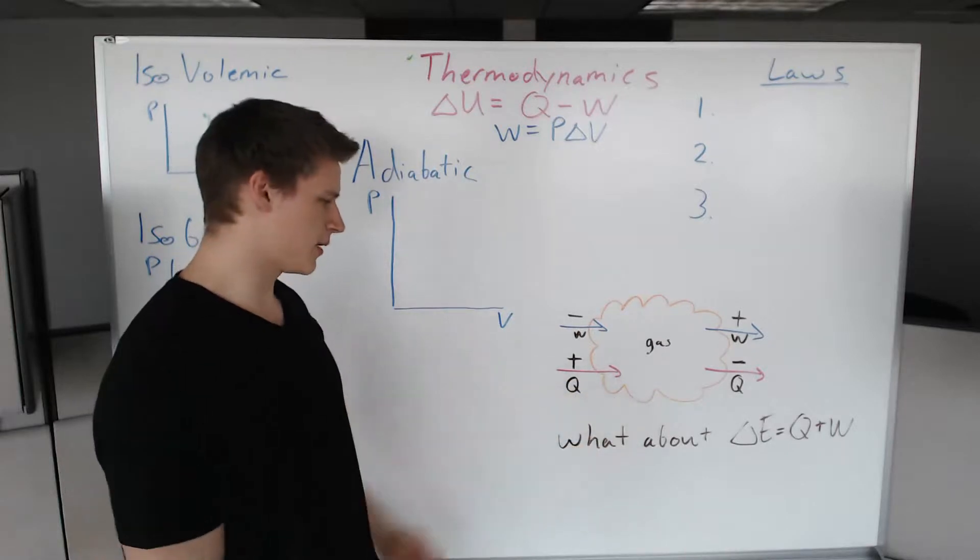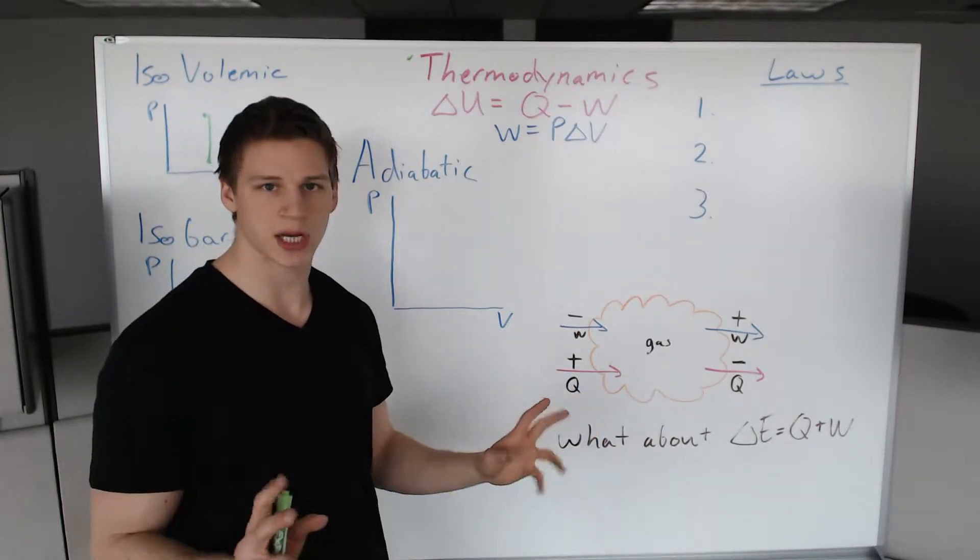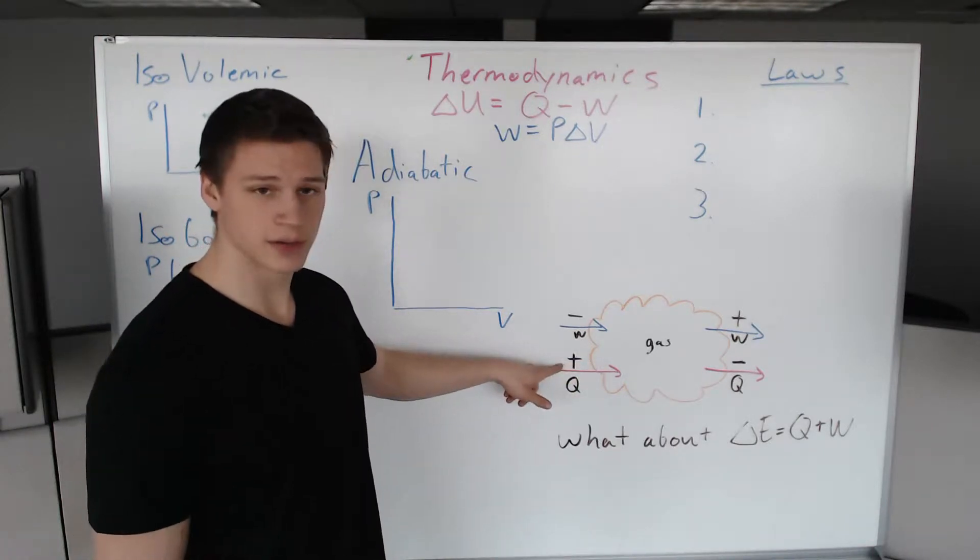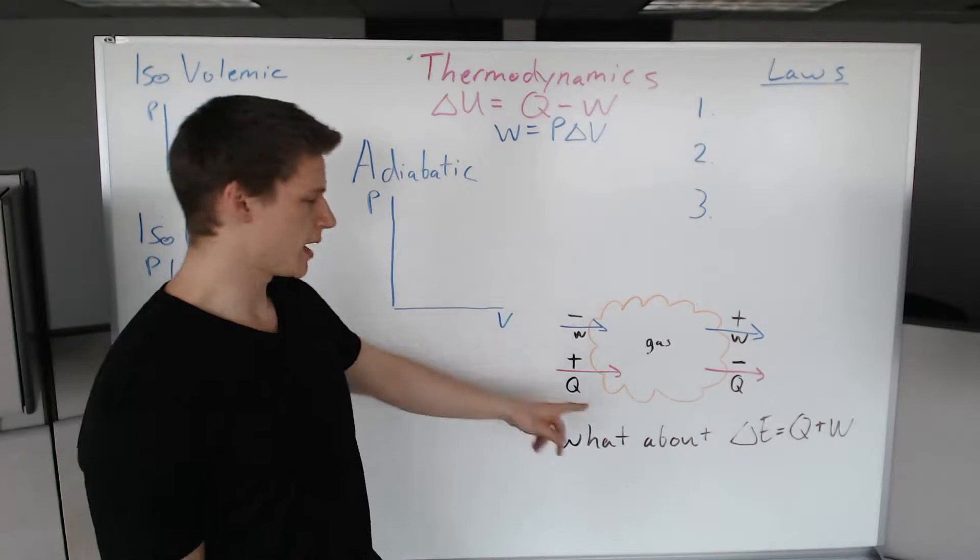This is our diagram of a gas. If we're putting energy into the gas, we're giving it potential energy, then heat is going to have to be a positive value which increases the internal energy. If heat leaves, it's going to be negative, which decreases the internal energy.